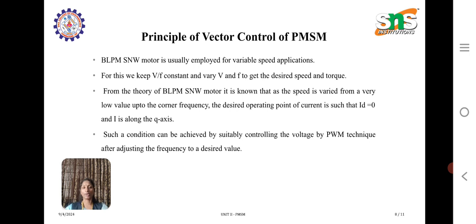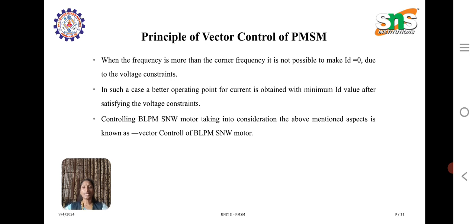In such cases, it is better that the operating point of current is obtained with minimum Id value after satisfying the voltage constraints.